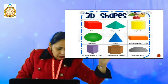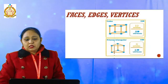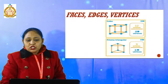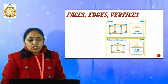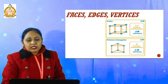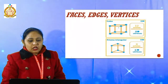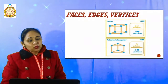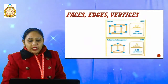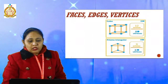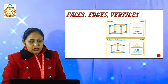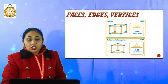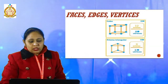Now once again students — faces, edges, and vertices. In the case of the cuboid or cube, we already counted: there are eight corners, that means eight vertices. And edges — counting the lines: one, two, three, four, five, six, seven, eight, nine, ten, eleven, and twelve. How many edges? Twelve.